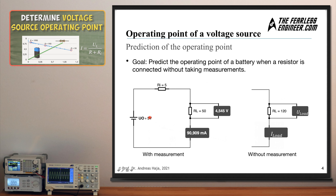Now let's look at this small circuit. It has an internal voltage source representing the battery's open-circuit voltage, an internal resistance of 5 ohms, and an open-circuit source voltage of 5 volts. A load resistor of 50 ohms is connected, and measurements from the simulation show 4.545 volts and 90.909 milliamps. The goal is to predict the operating point of the battery when we connect a different resistor. The battery is on the left and the load is on the right.